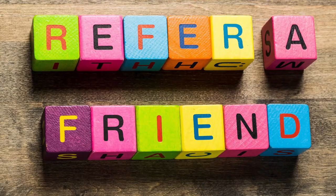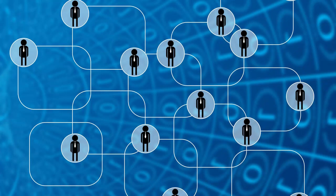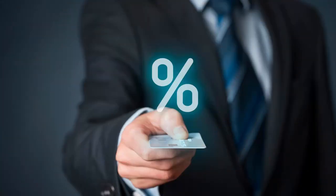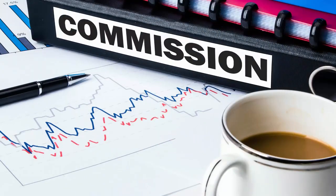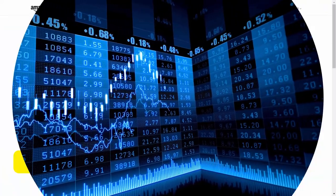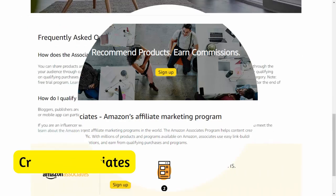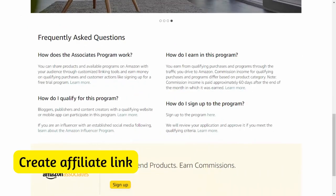Once you've found a product to promote, sign up for their affiliate program and receive a unique referral link to share with your audience. You can promote through your website, social media, email list, or any online platform. When someone clicks your link and makes a purchase, you earn a commission — typically somewhere between 5 to 50 percent of the sale price, depending on the product and program.